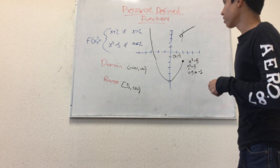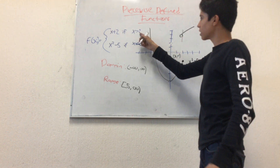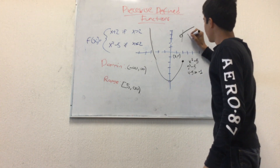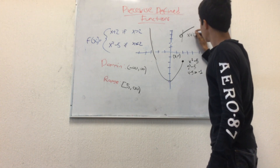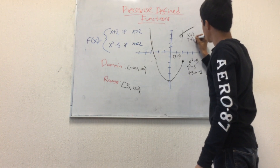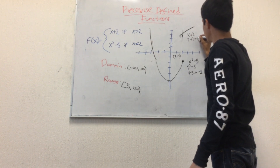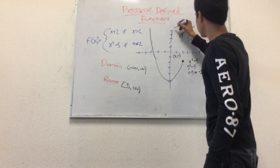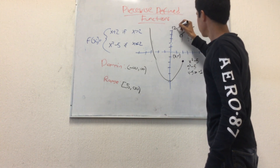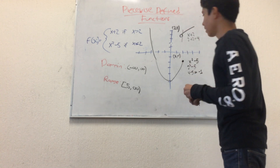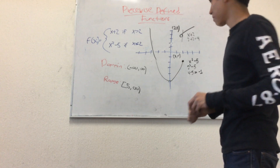For the other piece, we do the same. We substitute x equals 2 into x plus 2, which gives 2 plus 2 equals 4. So we have the coordinates (2, 4) for that piece. Now we can move on to the next example.